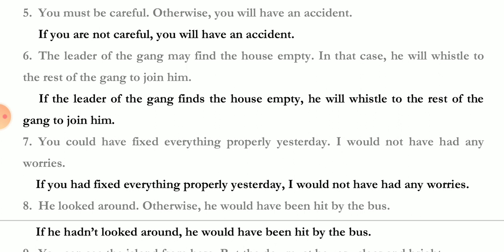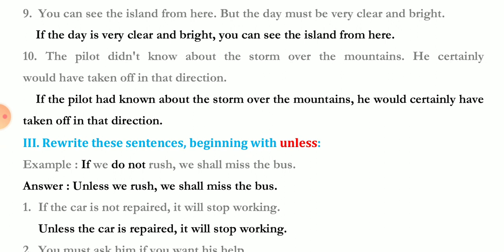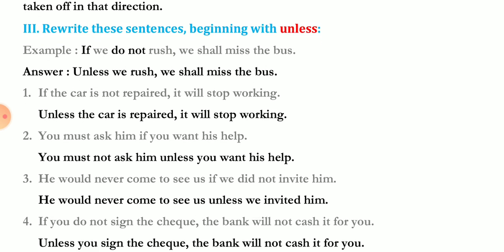'He looked around, otherwise he would have been hit by the bus.' 'You can see the island from here, but the day must be very clear and bright' — 'If the day is very clear and bright, you can see the island from here.' 'The pilot didn't know about the storm over the mountains; he certainly would have taken off in that direction' — 'If the pilot had known about the storm over the mountains, he would certainly have taken off in that direction.'